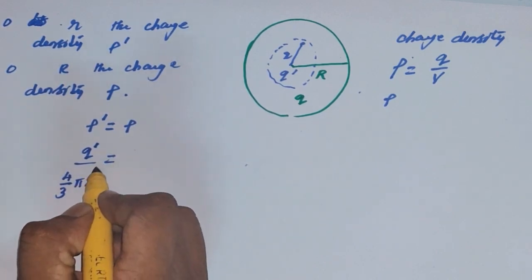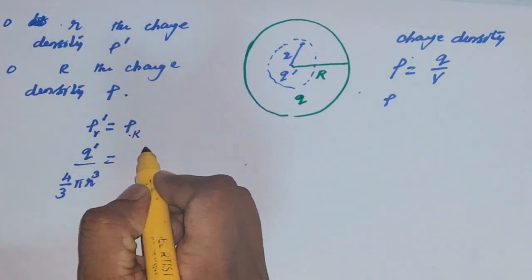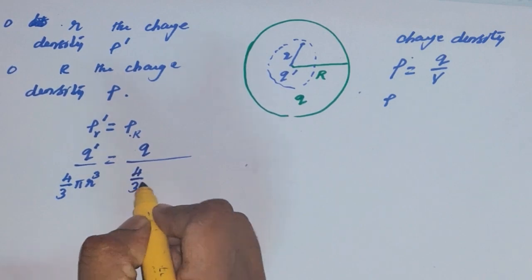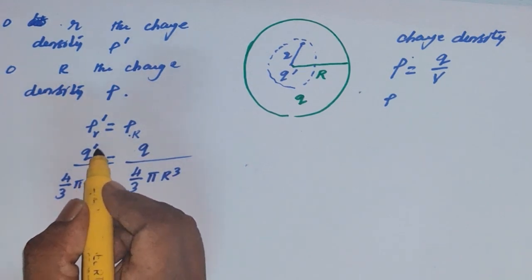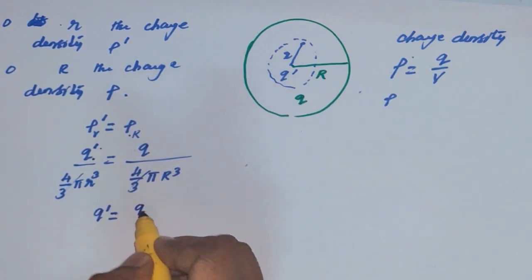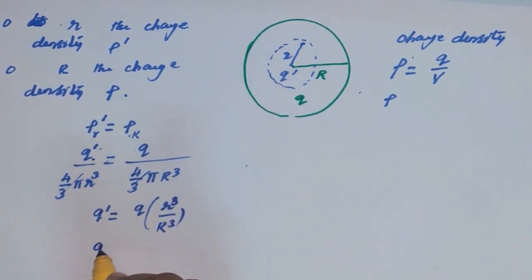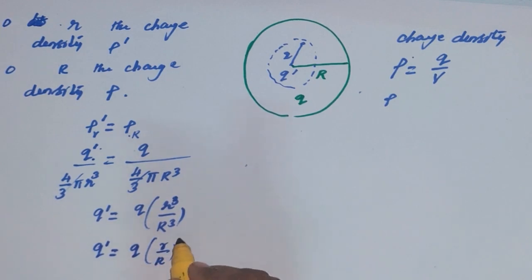The volume is (4/3)πr³. The charge density up to capital R is total charge Q divided by (4/3)πR³. Equating these, q prime equals Q times (r/R)³. So the net charge enclosed up to radius small r is q prime = Q × (r/R)³.